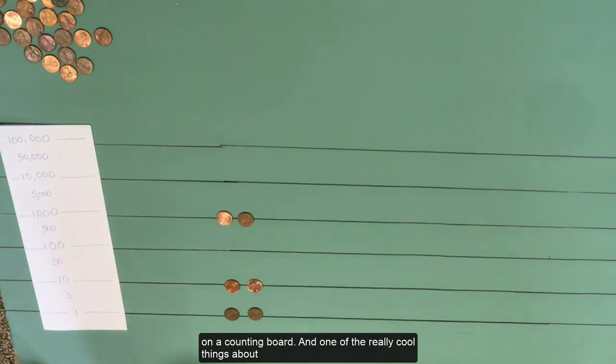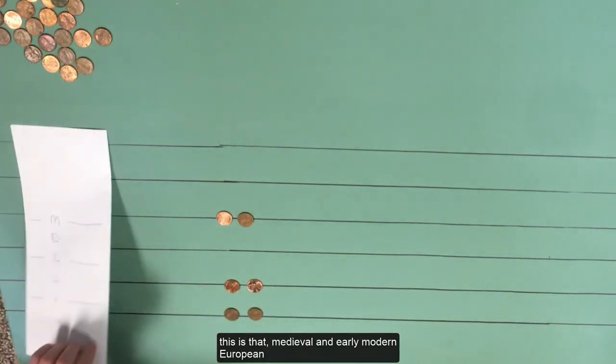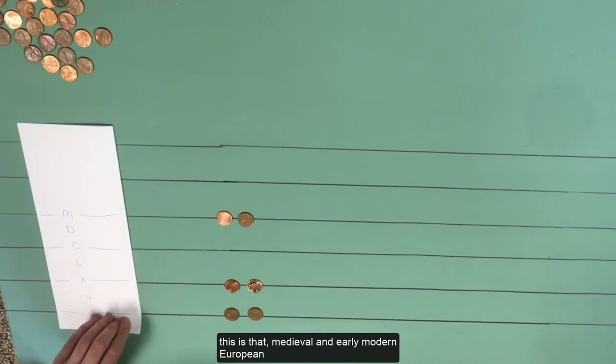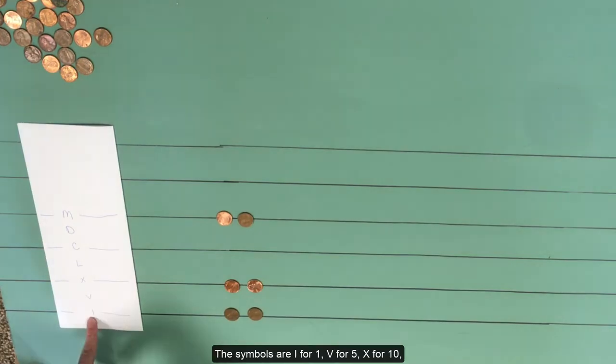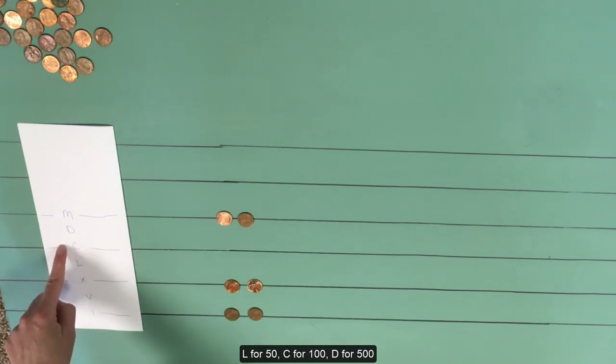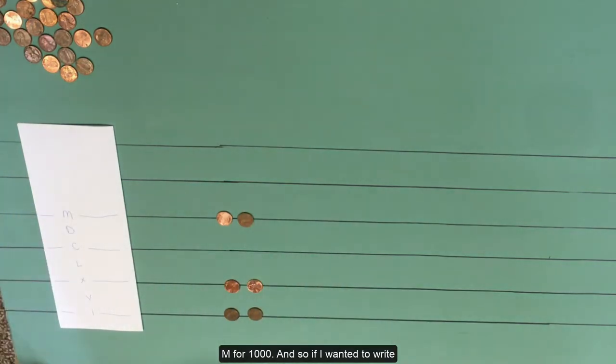And one of the really cool things about this is that medieval and early modern European people did not use Arabic numerals. The numbers that I had on the other side of this paper, they used Roman numerals. And some of you may be familiar with them. The symbols are I for 1, V for 5, X for 10, L for 50, C for 100, D for 500, M for 1000.